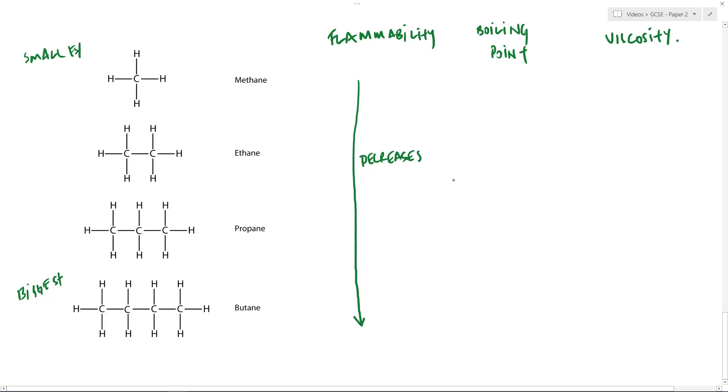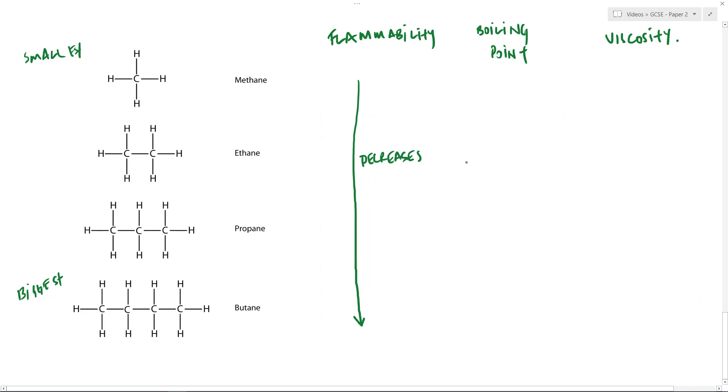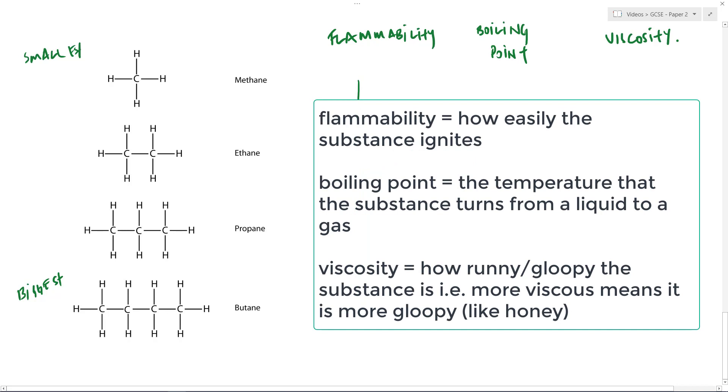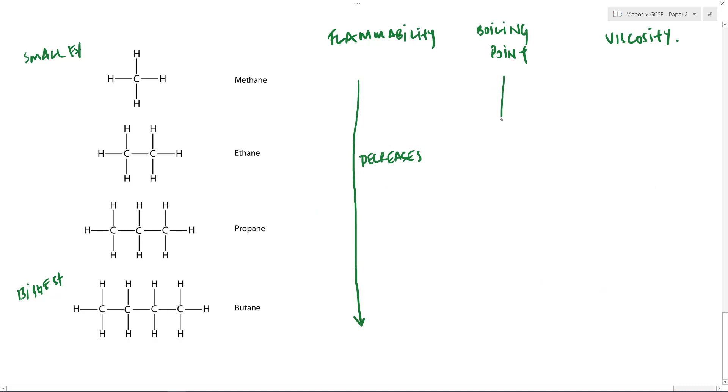So boiling point. What does boiling point mean? Boiling point is the temperature at which the substance, the molecule, turns from a liquid to a gas. And in this case, as we go down here, as we get bigger, we find the boiling point increases. And let's give you a reason for that. The reason the boiling point increases is because they get bigger and the forces between the molecules get stronger. So flammability decreases as it gets bigger. However, boiling point increases as it gets bigger.